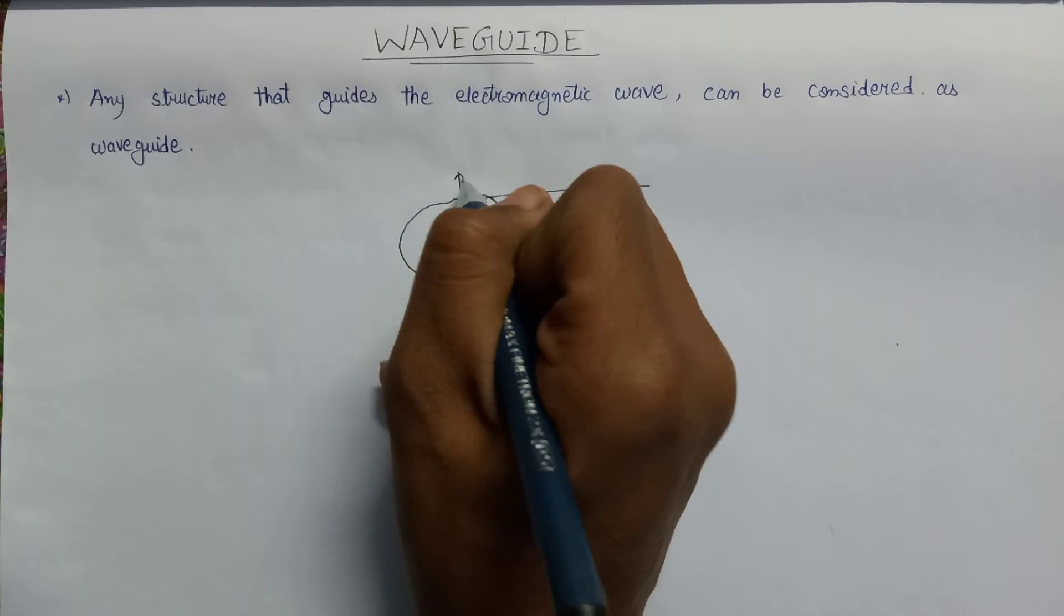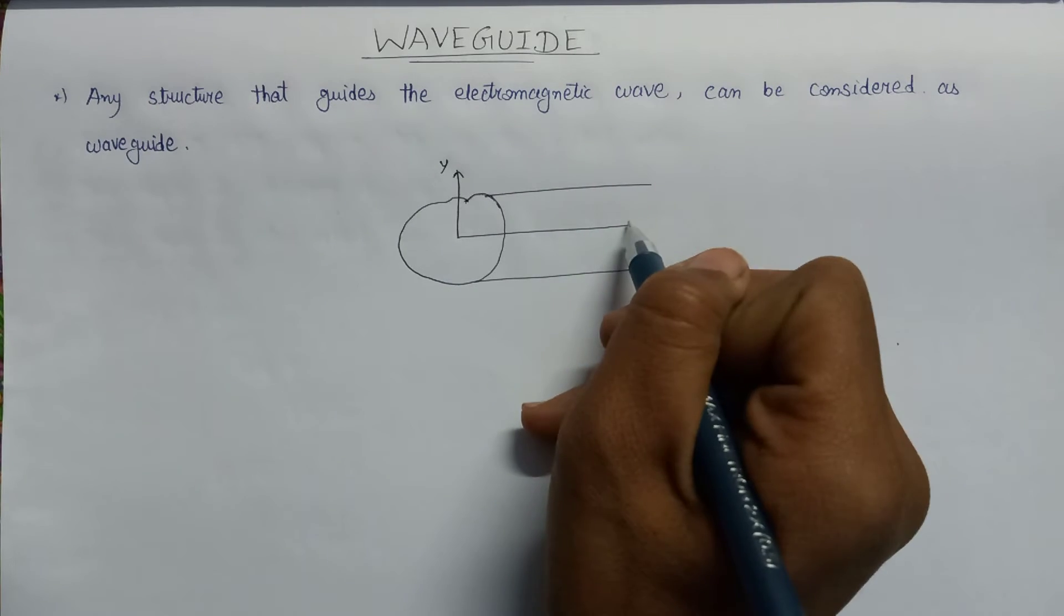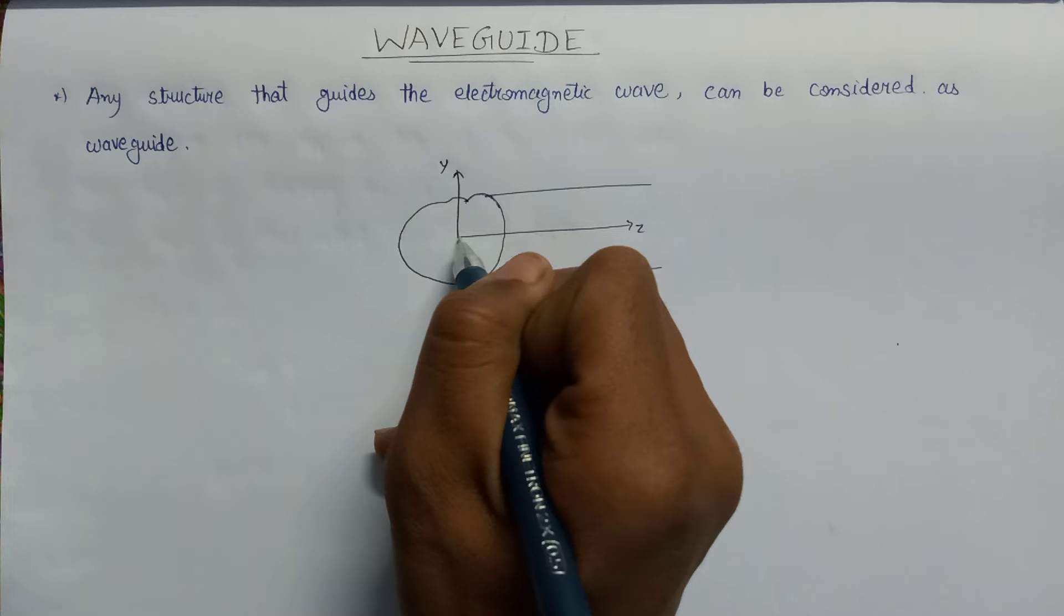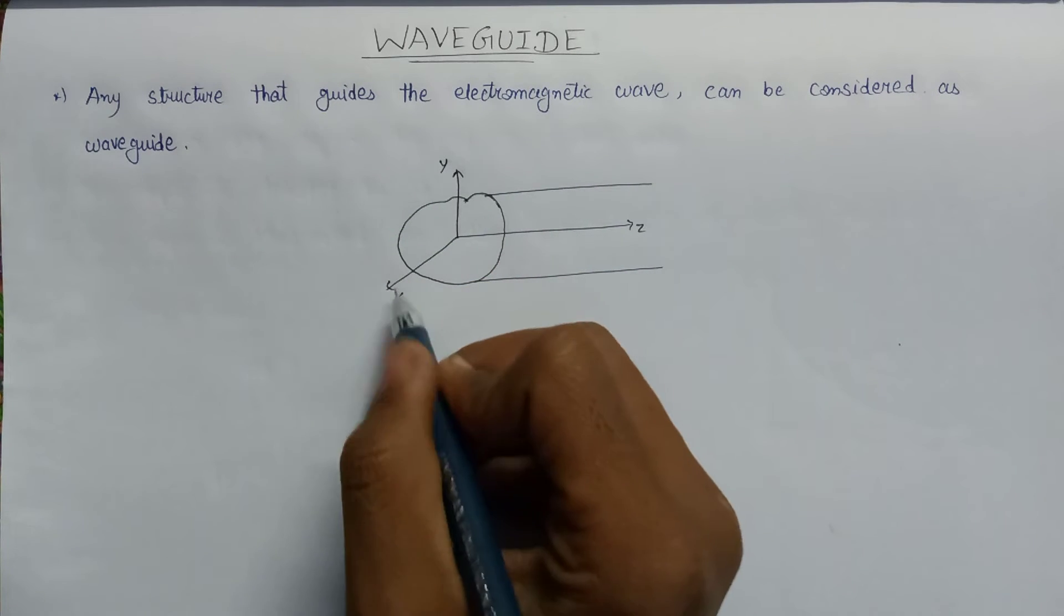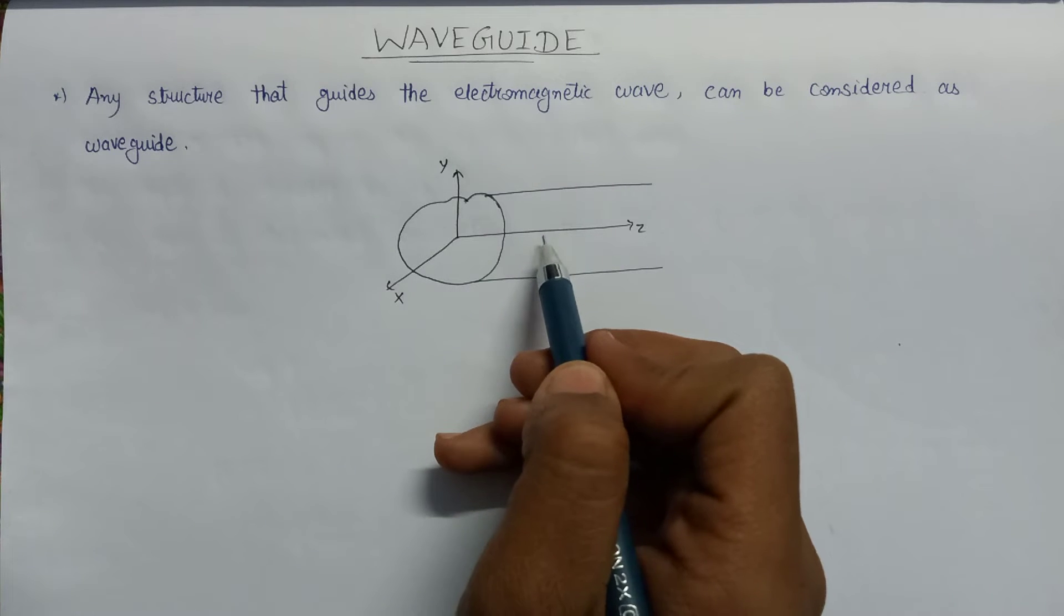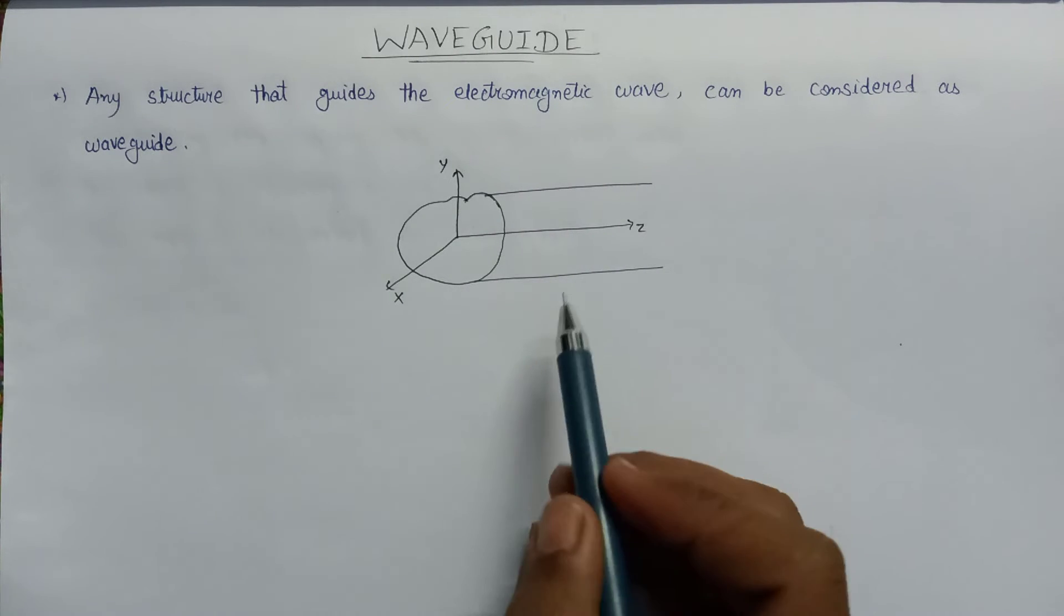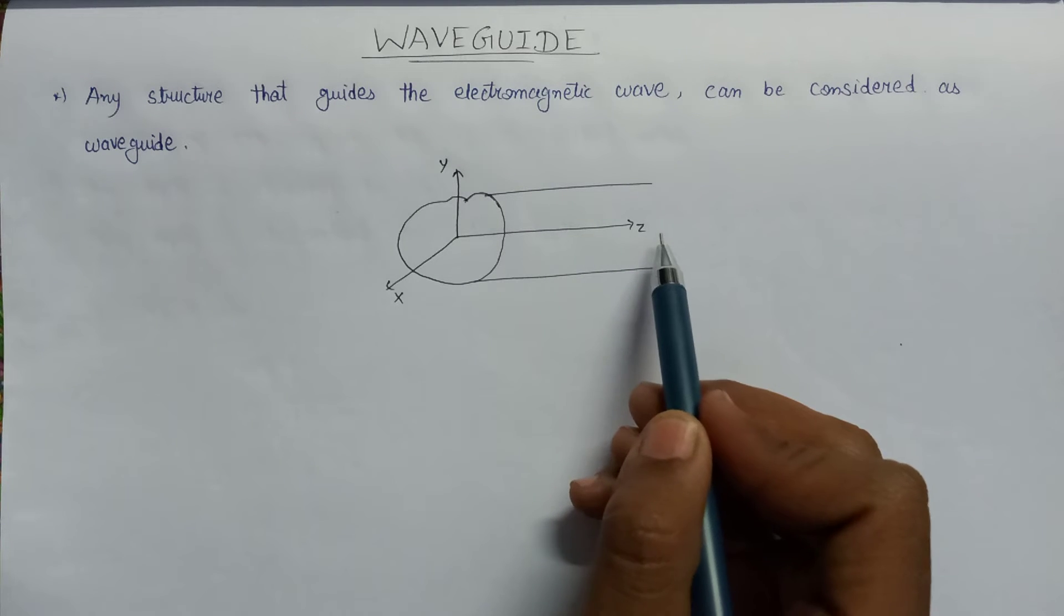Here is the vertically oriented y-axis and the horizontally oriented z-axis, and here is the x-axis. This x-axis is perpendicular to both the y-axis and z-axis. We are assuming that our electromagnetic wave is propagating in this positive z direction.